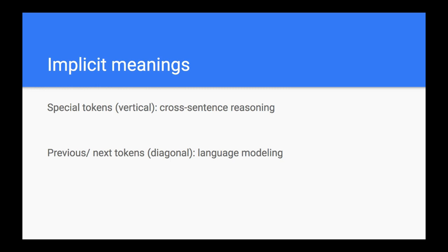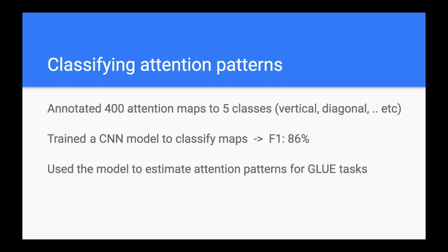This paper manually labels attention patterns and then trains a CNN model to predict them. They had around 1000 input examples, visualized the attention maps, and used humans to categorize which of the five categories each attention map belongs to. After filtering for quality, they ended up with 400 labeled examples, which they used to train a CNN classifier. This model achieves 86% F1 score on classifying the attention maps. They then use this CNN model to estimate attention patterns for the GLUE task — a natural language understanding benchmark consisting of around 10 NLP tasks.